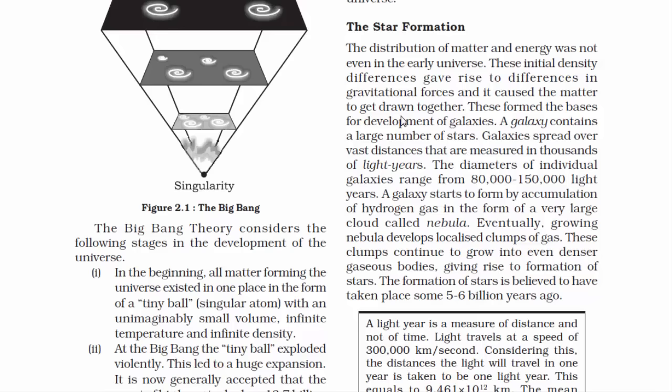Now we will read about how the stars were formed. The formation of stars is believed to have taken place some 5 to 6 billion years ago. Earth is believed to be 4.6 billion years old. So clearly stars were there before the planets.